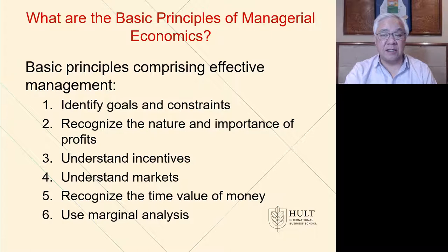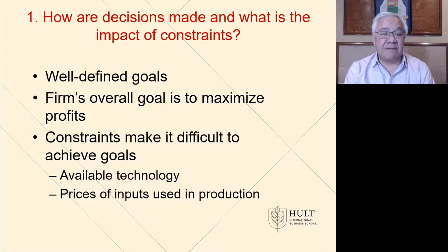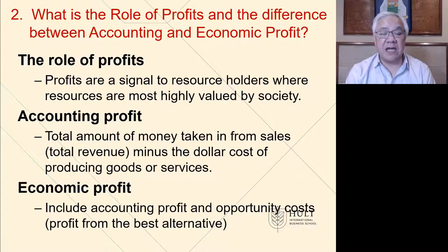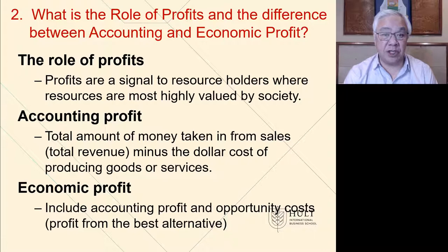Let's look at decisions and the impact of constraints. First, we want well-defined goals — we're going to use maximizing profits. Constraints might be technological, or the basics of inputs to production, which could be labor or other assets necessary to produce your products. The role of profits is to signal resource holders where resources are most highly valued by society. Economics allocates scarce resources to where the maximum benefit is achieved by society.